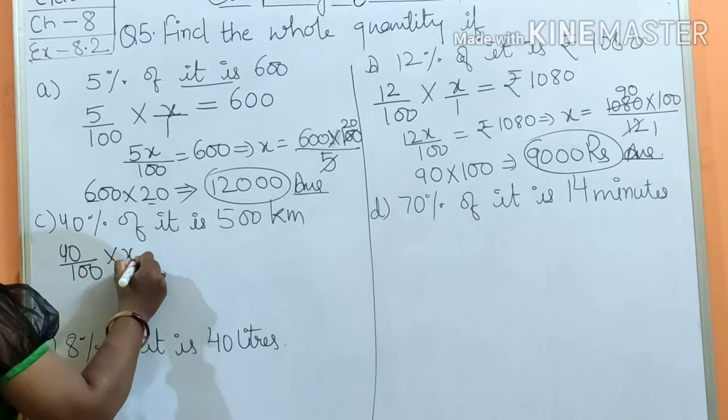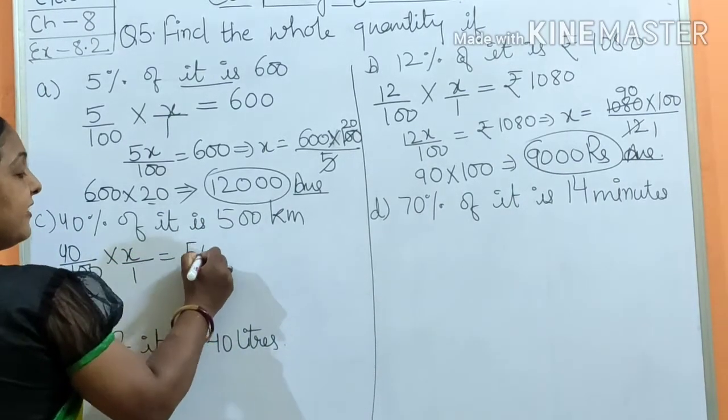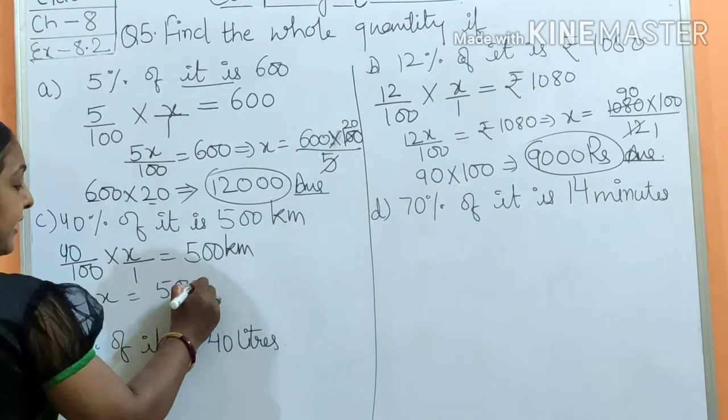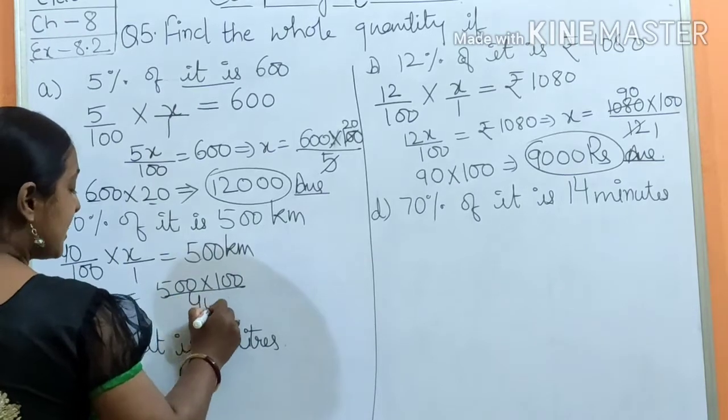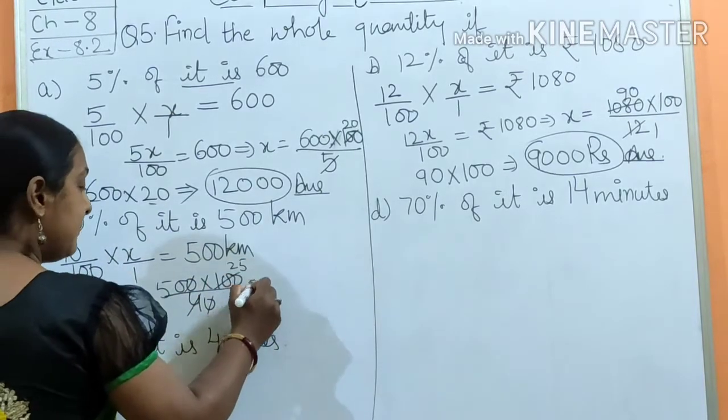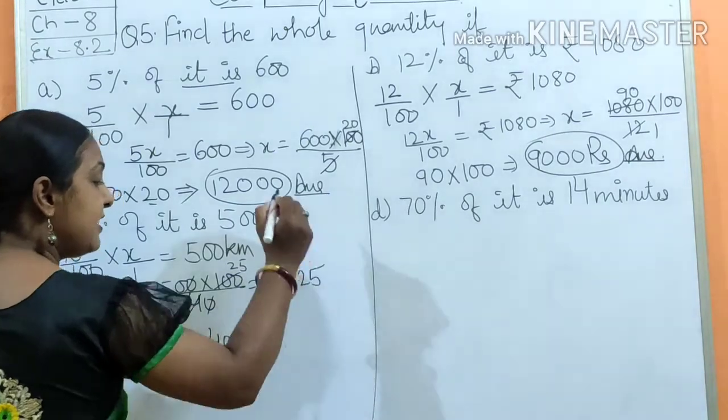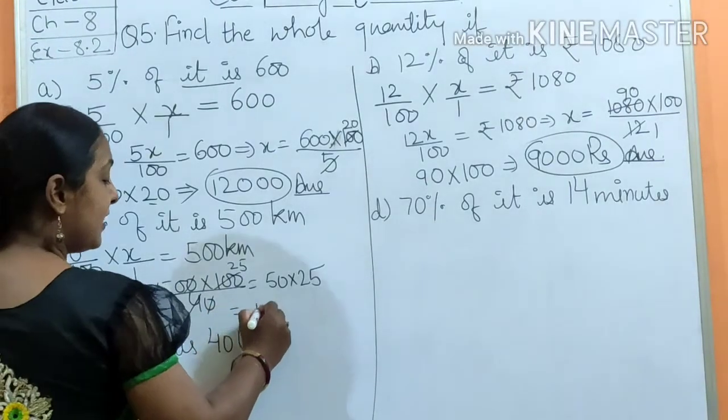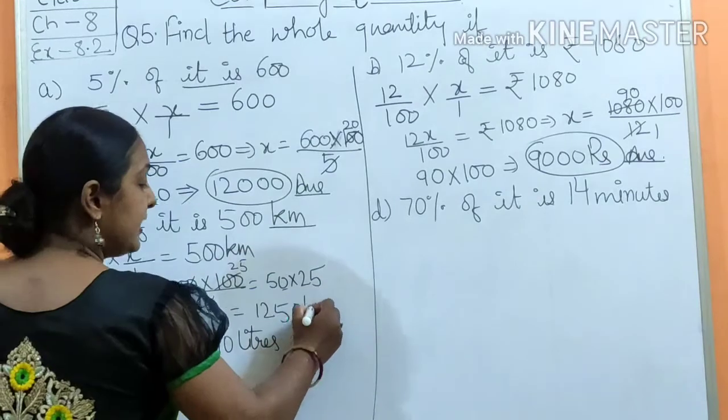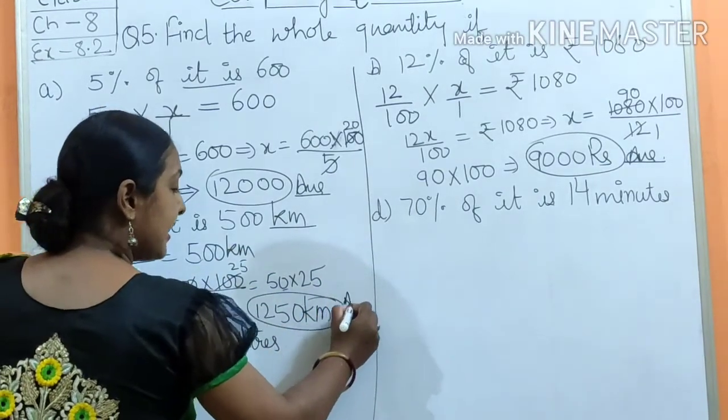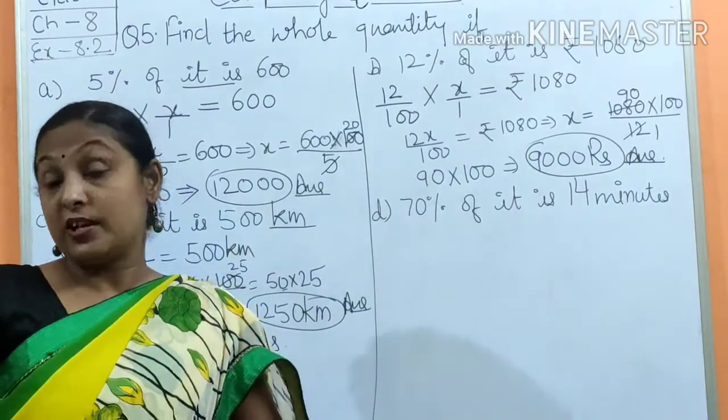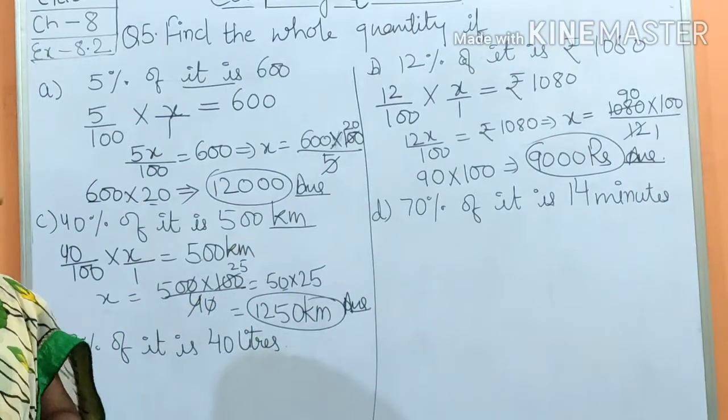Part c: 40% of it is 500 km. It is means x. Equals to 500 km. Now transposing: x is equals to 500 multiply by 100 upon 40. Cutting, 0 with 0 cancels, 4 into 100 is 25 times. So I get 50 multiply 25, which is 125, and put the zero, so I get 1250. And its unit was kilometer, so we write kilometers. So my answer is 1250 kilometers. If you take 40% of 1250 kilometers, your answer should be 500.